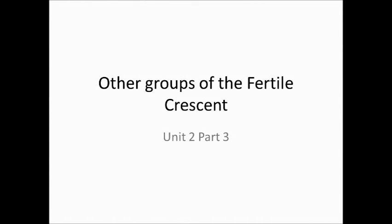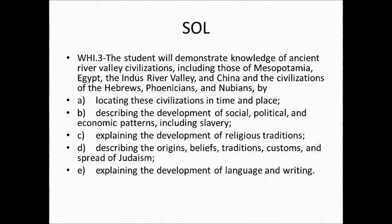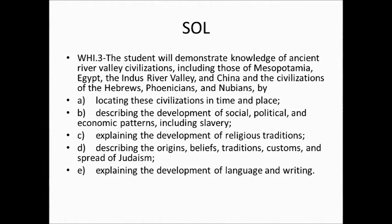This is the last video for Unit 2 and we're going to be talking about the other groups, including the Phoenicians. The SOL focuses on how religions and societies were set up for most of the river valley civilizations, and we've been focusing on the Middle East and the Fertile Crescent. The big ideas are: the Phoenicians create an alphabet based on sounds, not pictograms, and the Hebrews or Jews create a monotheistic religion based on personal behavior and ethics instead of gods of nature.